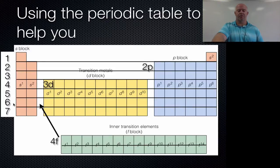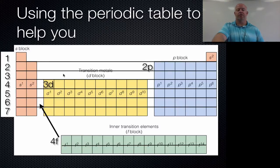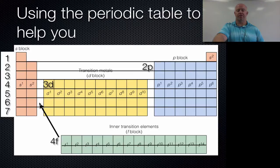Notice how we have numbers 1 through 7 — those indicate your energy level. There is some overlap when filling electrons into their orbitals, and that overlap can be accounted for by the periodic table. In the D block, the D block is always 1 minus the energy level you're on — so 3D, 4D, 5D, and 6D. The F block is 2 minus the energy level — so since we're in the 6th energy level, it would be 4F and then 5F.